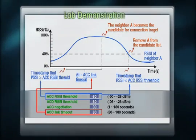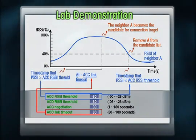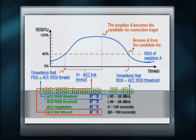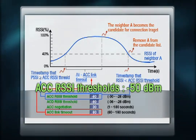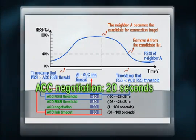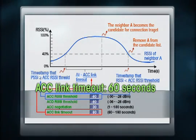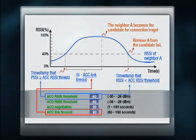In this demonstration, we have set the thresholds to minus 50 dBm, negotiation timeout to 20 seconds, and link timeout to 60 seconds.